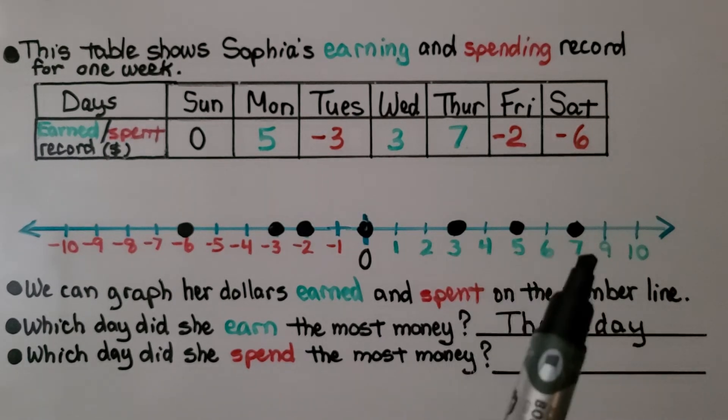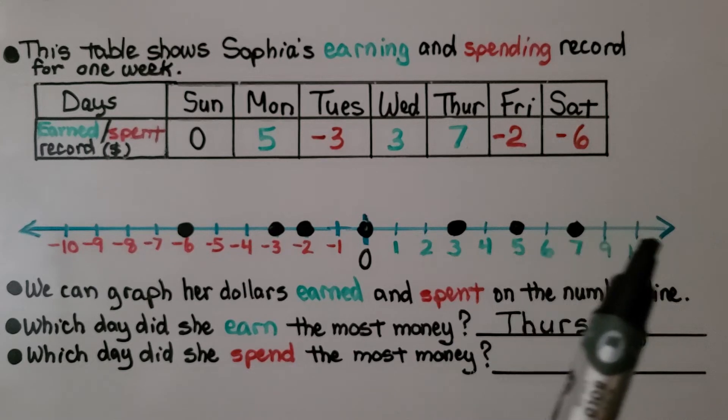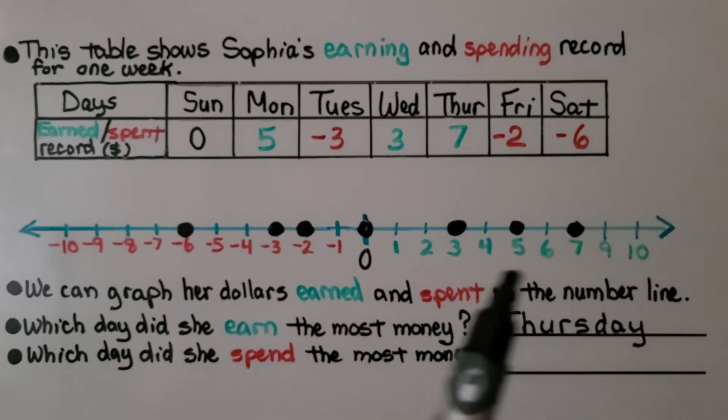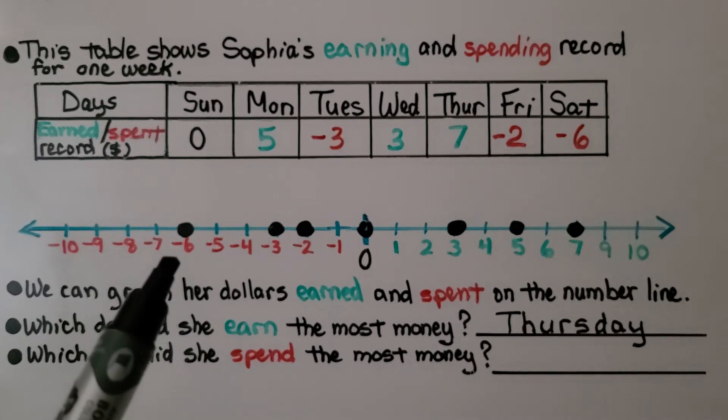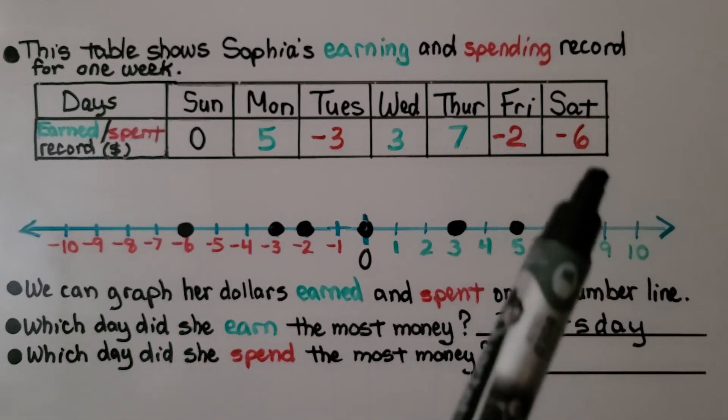Thursday is the most because 7 is farther to the right than the other points. And which day did she spend the most money? We can find this by looking for the point farthest to the left. That's a negative 6. That would be Saturday.